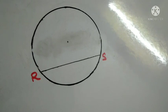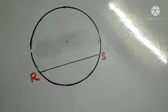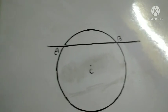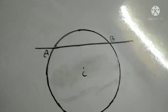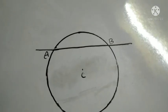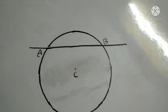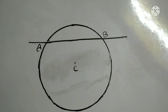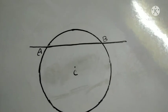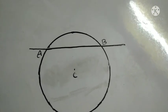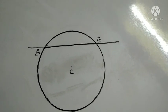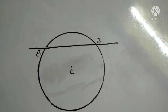Now we are going to learn what is a secant. A line that intercepts a circle is known as a secant. In the adjoining figure, AB is a secant. A circle has an infinite number of secants.